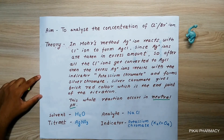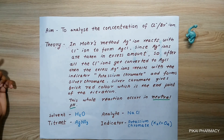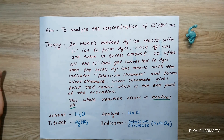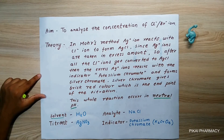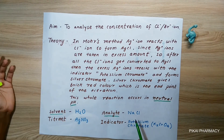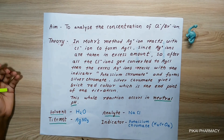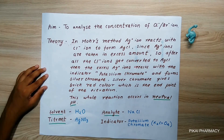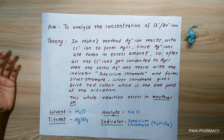The silver chromate precipitates and gives red color at a pH of 7, that is at neutral pH. The excess Ag⁺ ions, after forming AgCl, react with the indicator potassium chromate to give the red color precipitate. In this titration, the solvent is water, the analyte is sodium chloride solution, the titrant is silver nitrate solution (AgNO₃), and the indicator is potassium chromate.